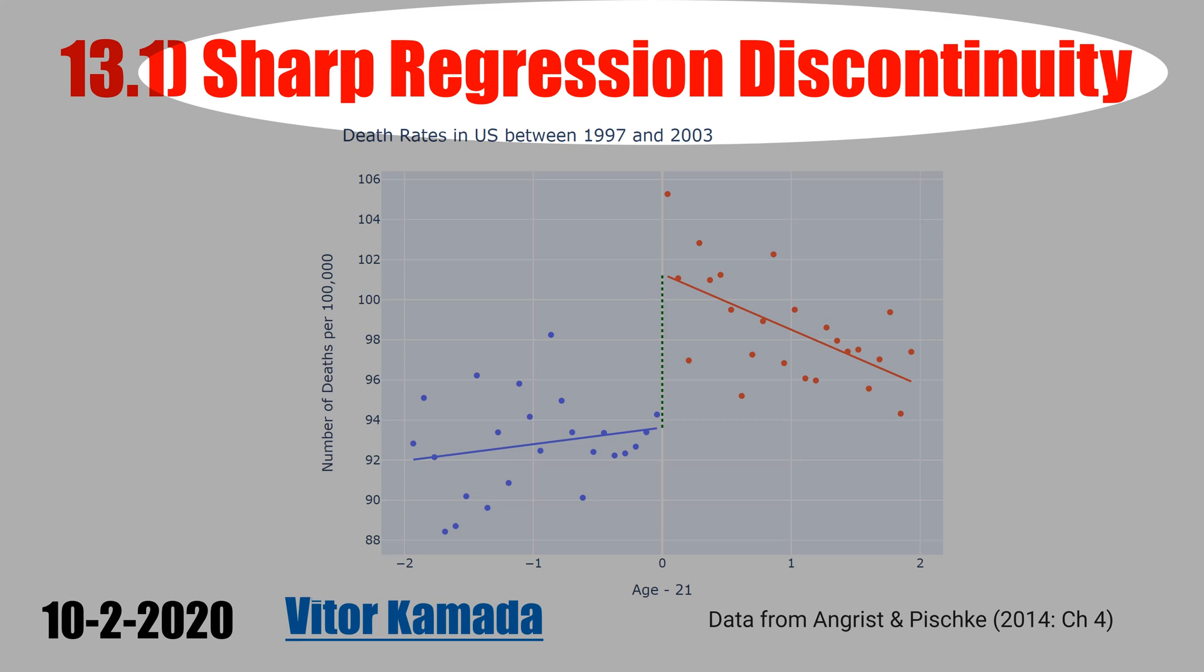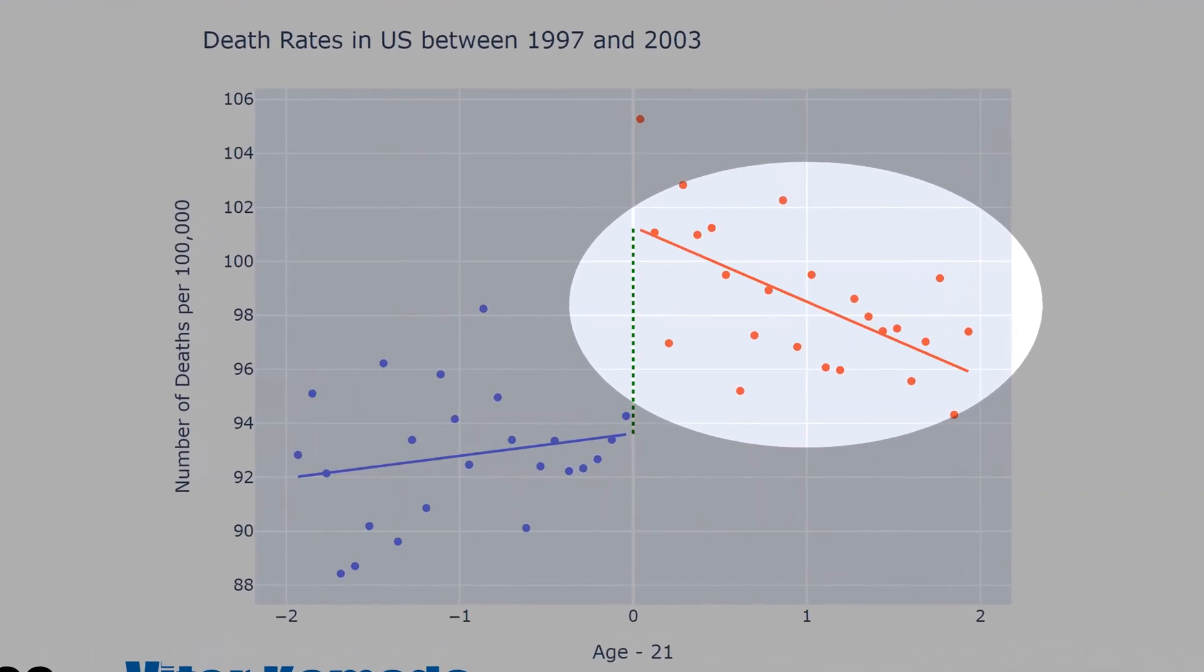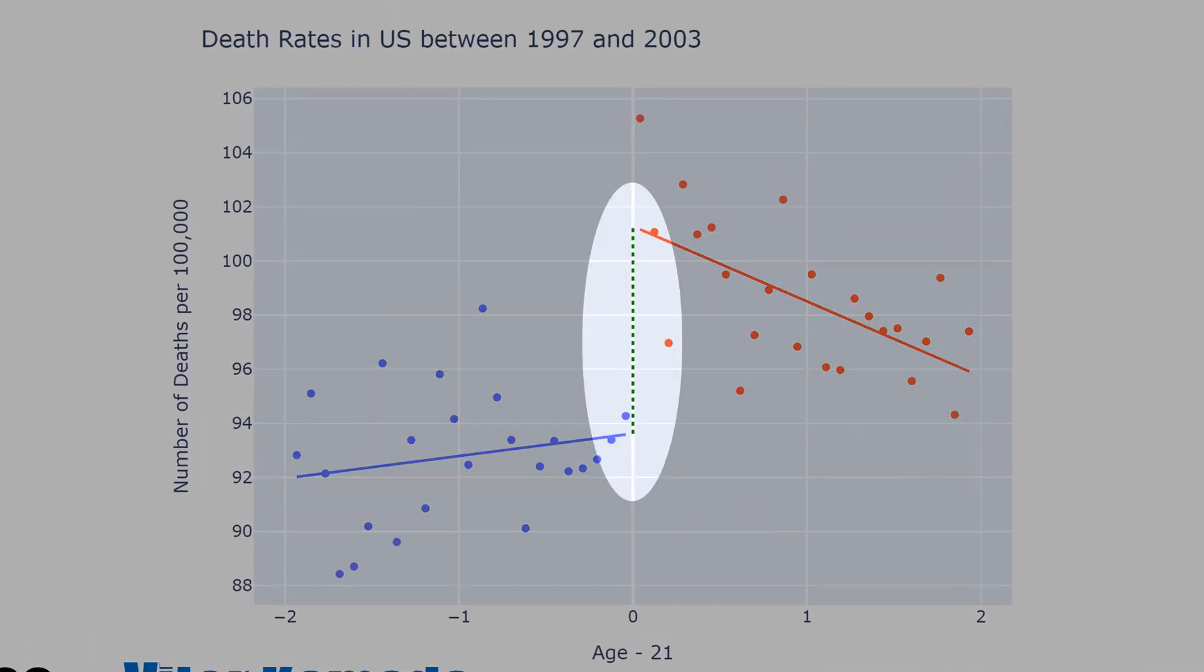In this video, let's learn what is Sharp Regression Discontinuity. Regression because you have this red line here and this blue line here, and the discontinuity because you have this sharp discontinuity here, this jump.